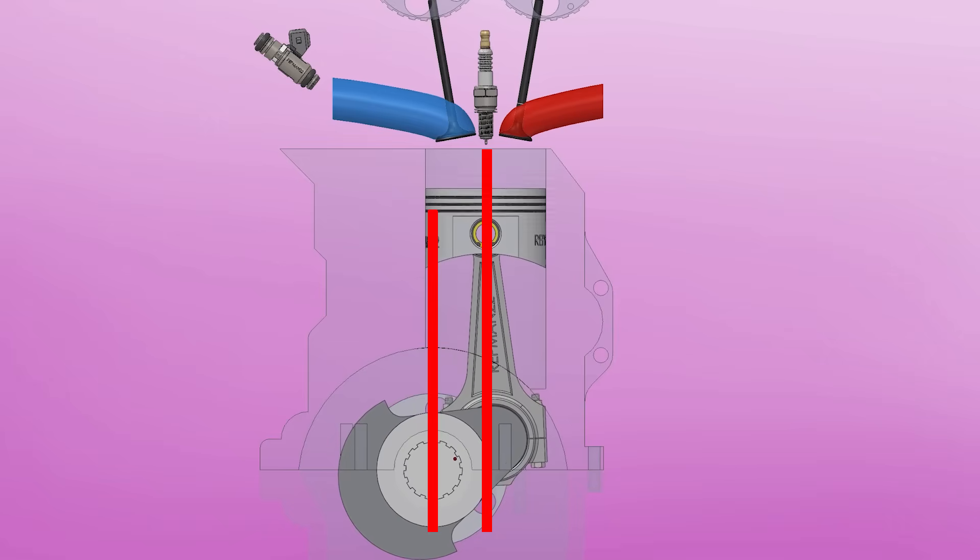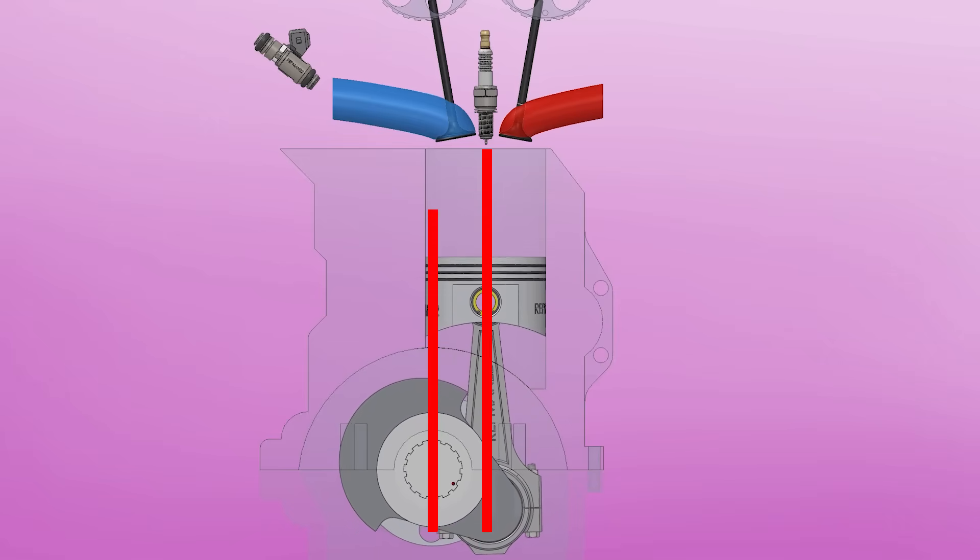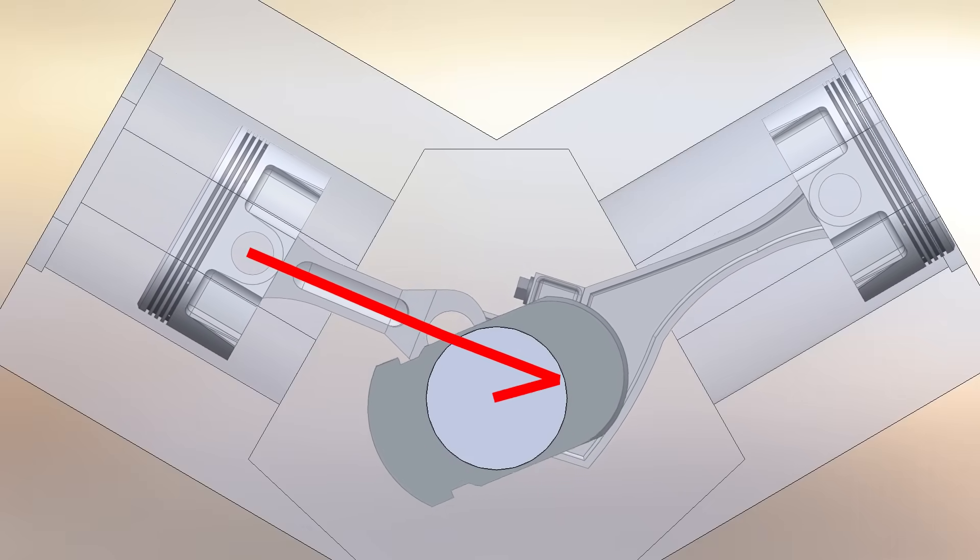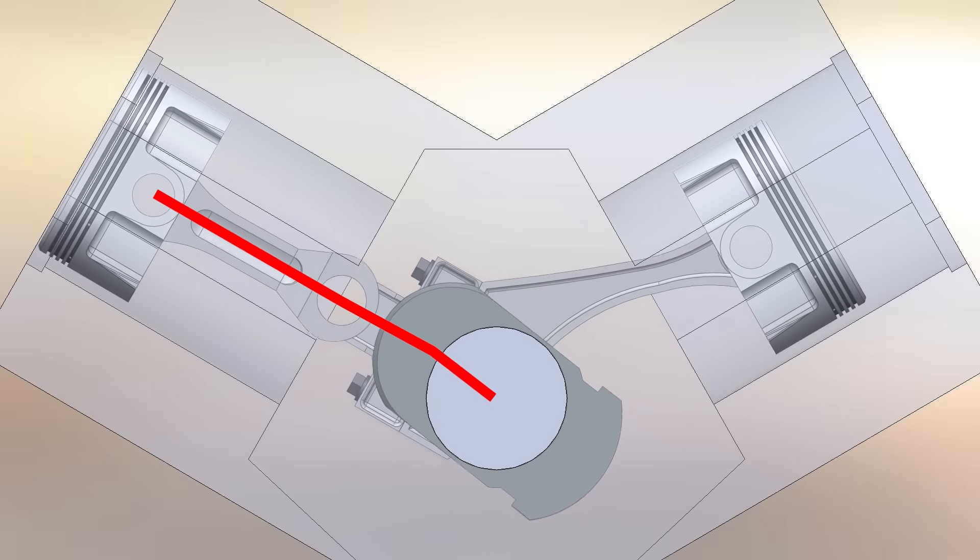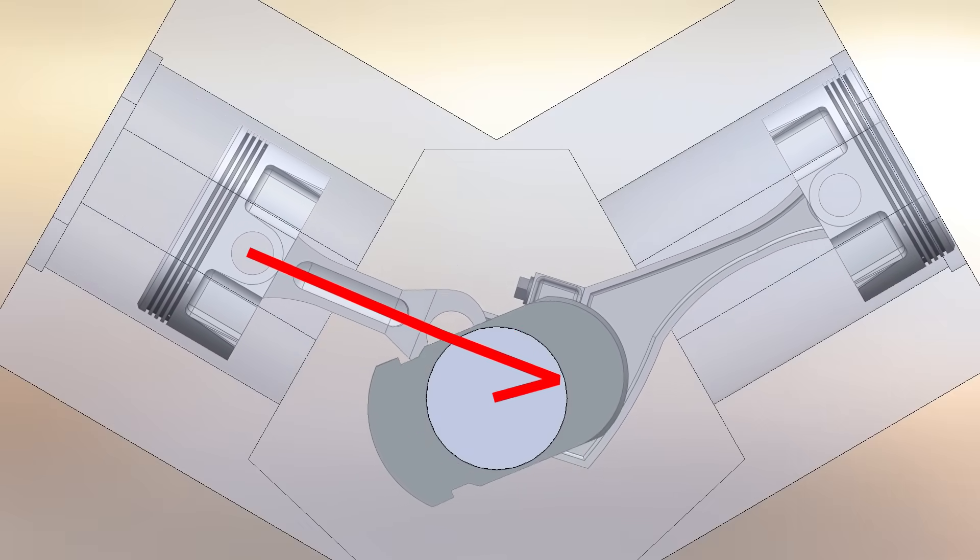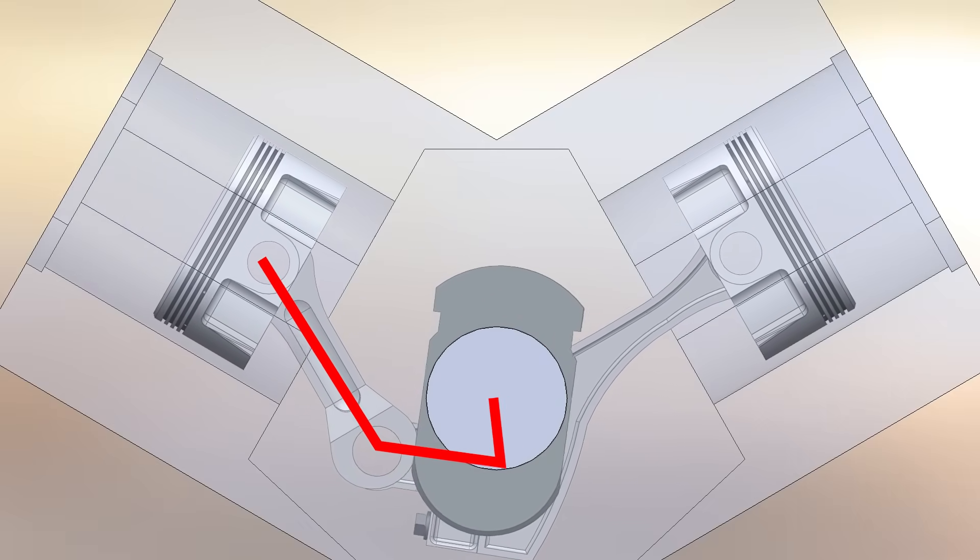This is similar to cylinder offset, but in this case, reversed. The rod angle is less favorable, combustion happens faster at the top, and there's more rod tilt, pushing the piston harder against the cylinder wall and increasing wear among other issues.